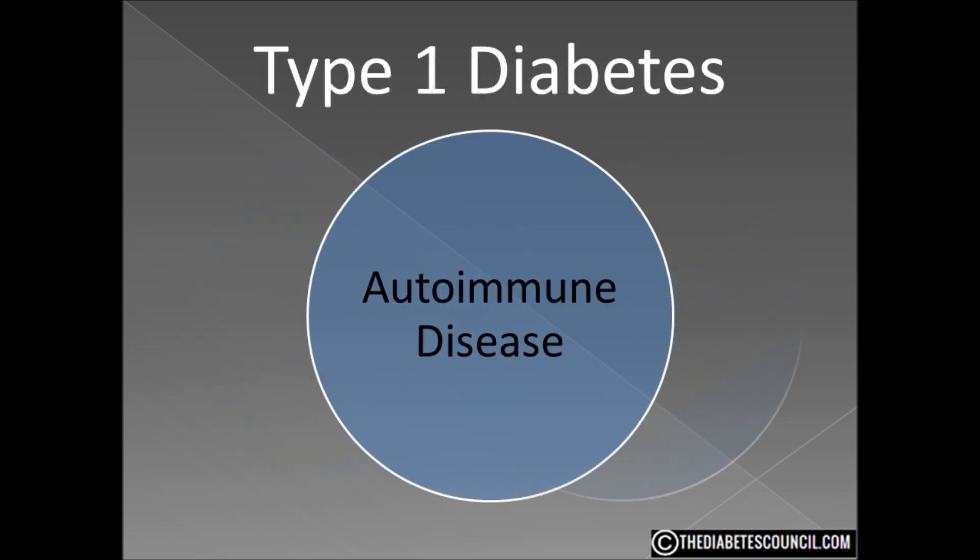Type 1 diabetes used to be called juvenile diabetes or insulin dependent diabetes. Type 1 diabetes occurs because the insulin producing cells of the pancreas are actually destroyed by the immune system. Type 1 is considered an autoimmune disease. Its onset has nothing to do with diet or lifestyle. There is nothing you can do to prevent type 1, and at present, nothing you can do to get rid of it.